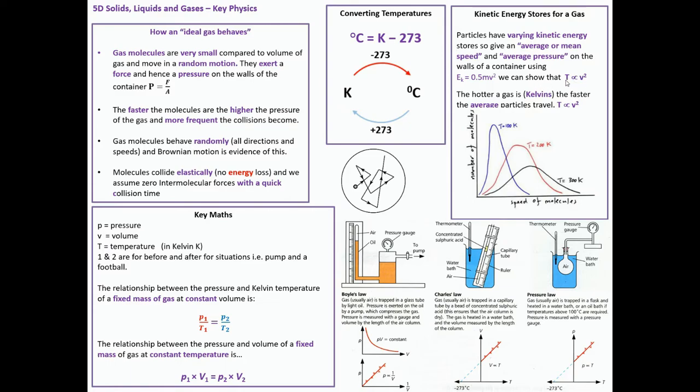Particles have a kinetic energy store. They will all have different speeds, but on average, have an average speed and pressure. EK is a half mv squared. We can show that T is proportional to v squared. So as v goes up, T goes up, but it's not a linear relationship. The hotter the gas, the faster the particles travel. As the temperature goes up, this graph shows a gas at 100 Kelvin, 200 Kelvin, 300 Kelvin. When we've got a hot gas, there's a much bigger spread of different speeds for the particles. They're more frequent at a lower temperature, but the actual speed is lower. So the mean temperature is lower.